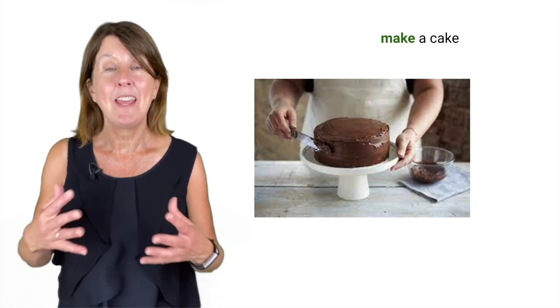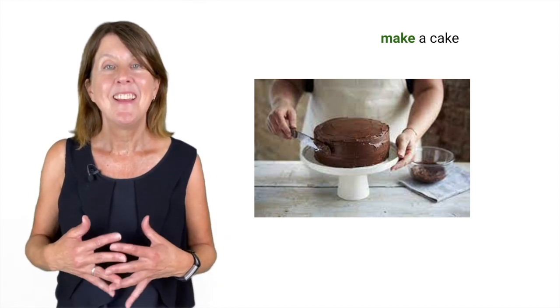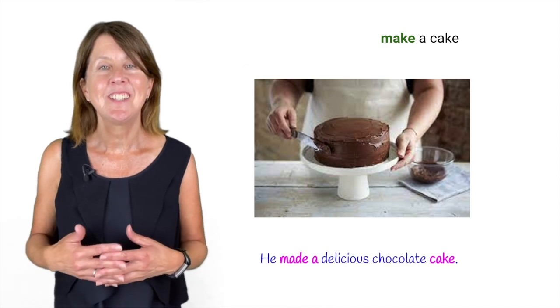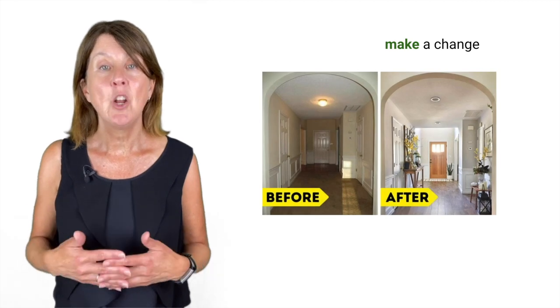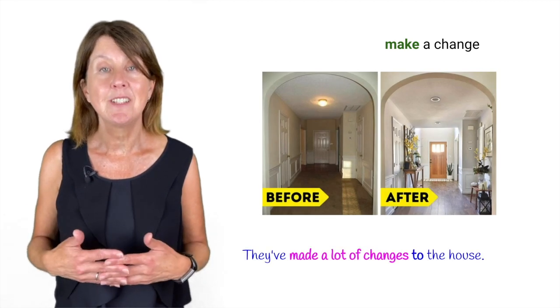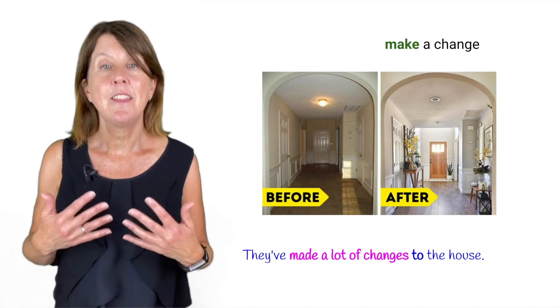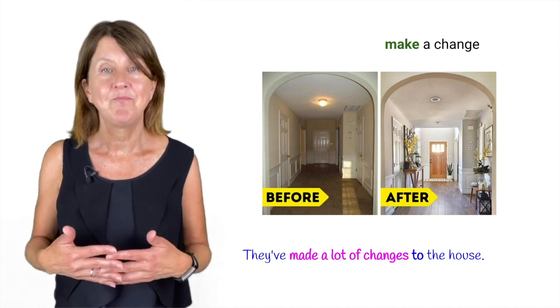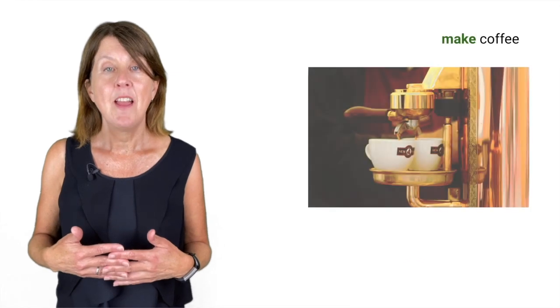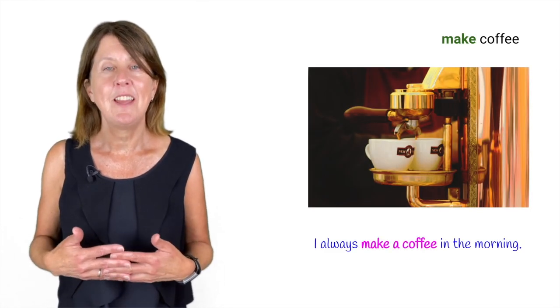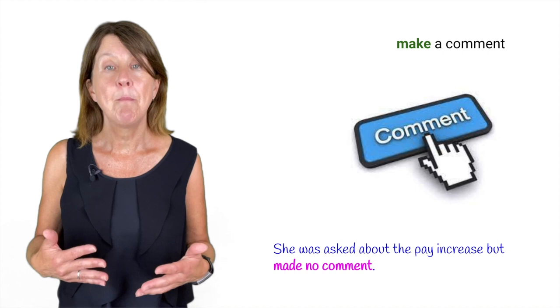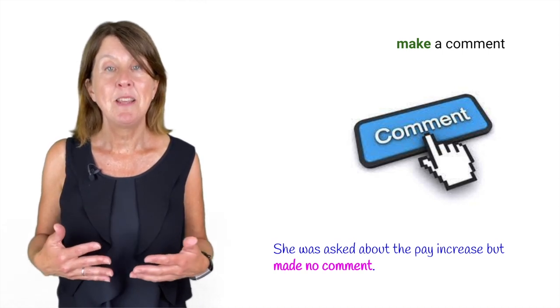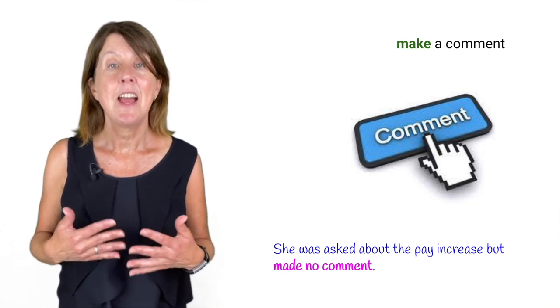We make a cake. Again, this is what we make, the actual outcome. For example, he made a delicious chocolate cake. We make a change. They've made a lot of changes to the house. The changes are the outcome of an action. We make coffee. I always make a coffee in the morning. We make a comment. She was asked about the pay increase but made no comment. This means she did not give an opinion.